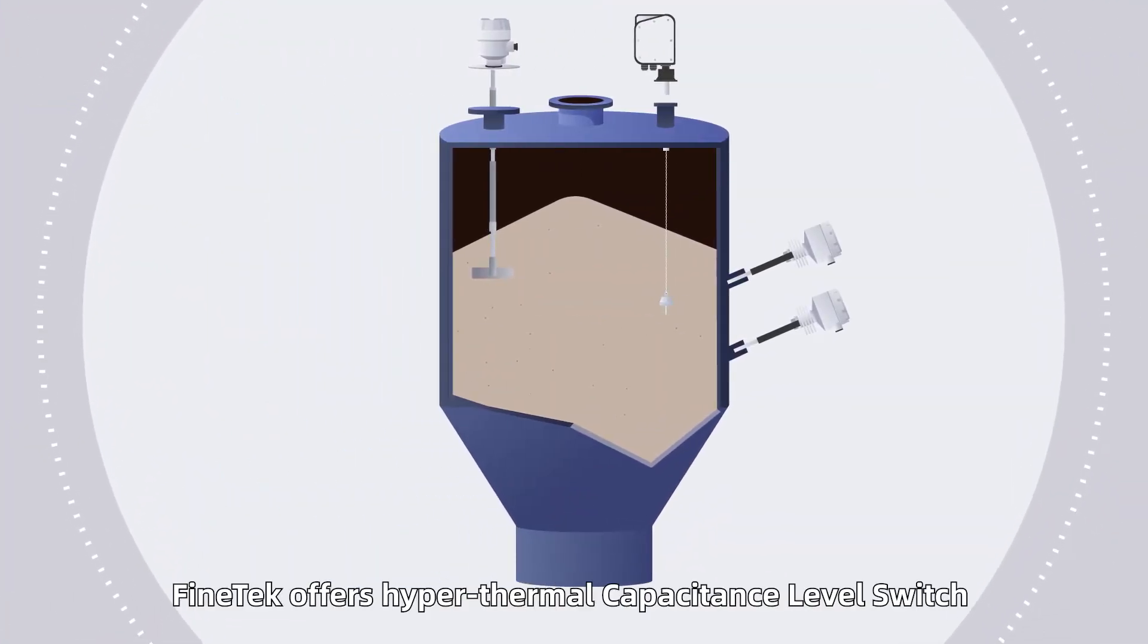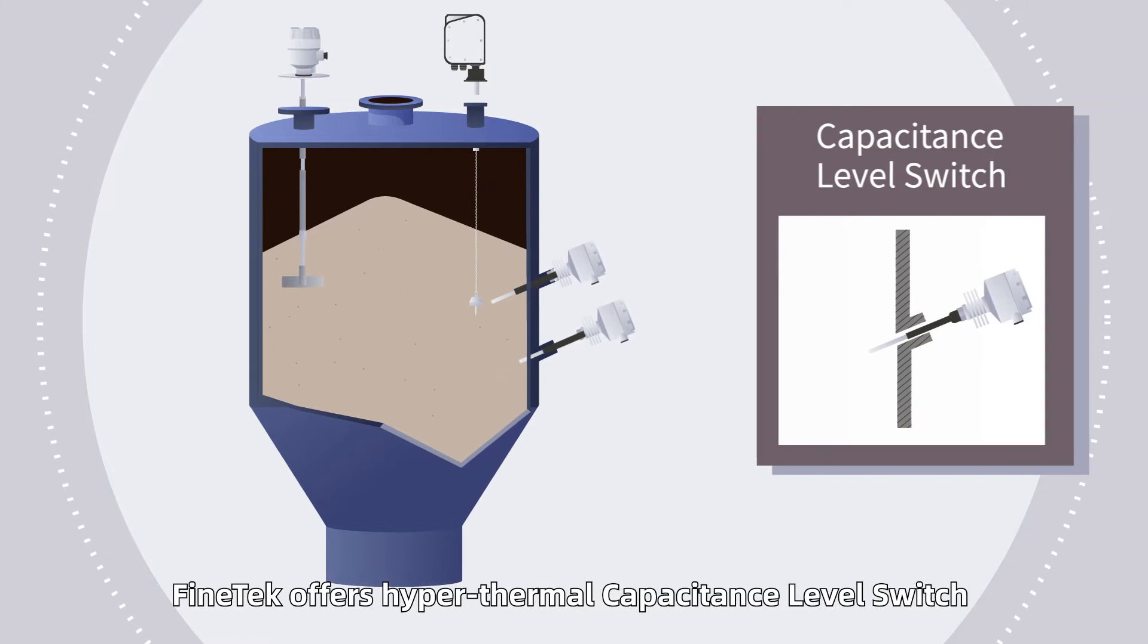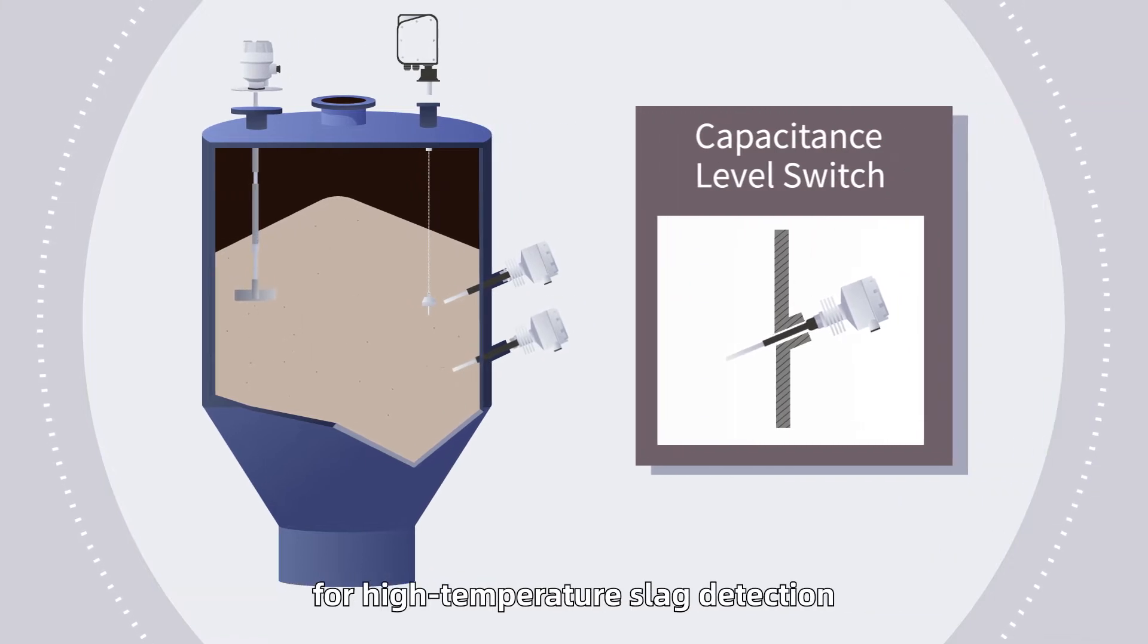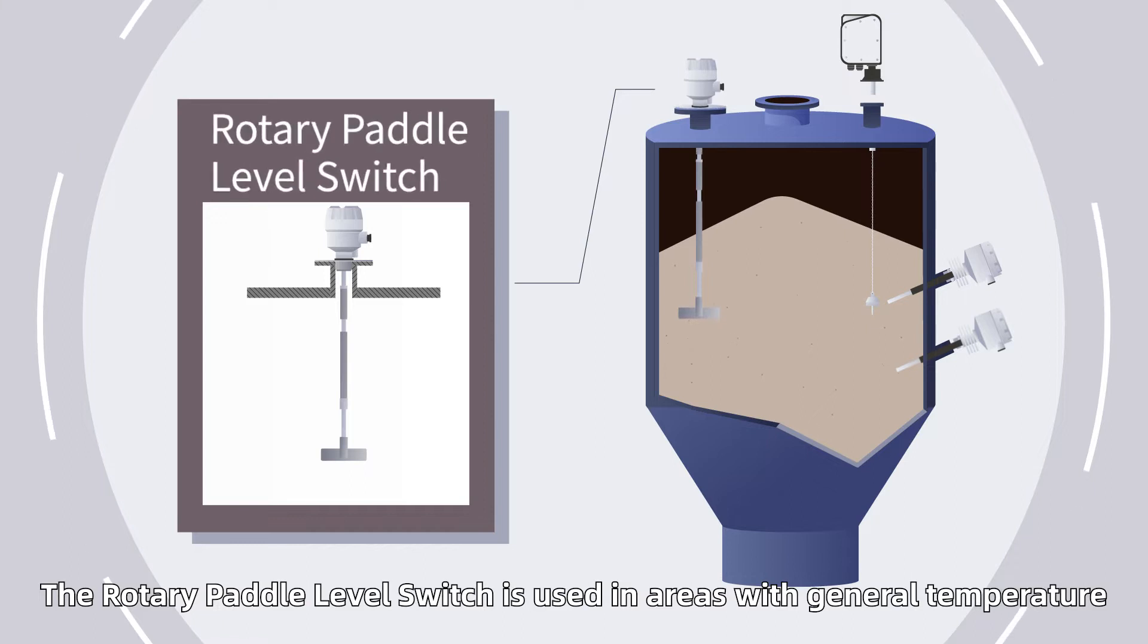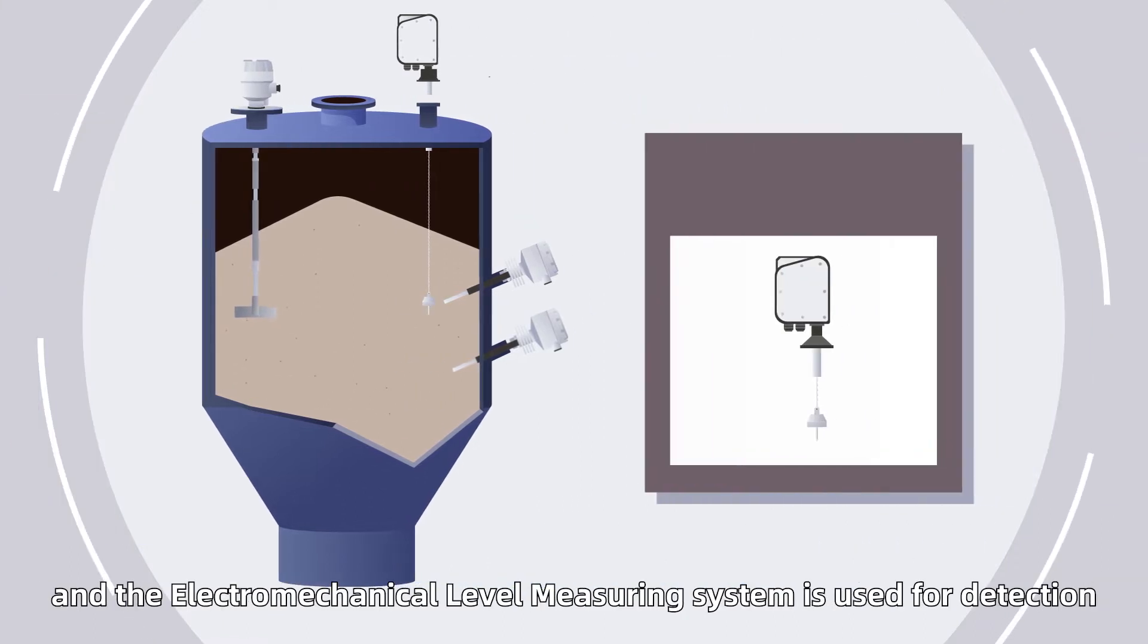For example, in the cement industry, FinTech offers hyperthermal capacitance level switch for high temperature solid detection. The rotary paddle level switch is used in areas with general temperature, and the electromechanical level measuring system is used for detection.